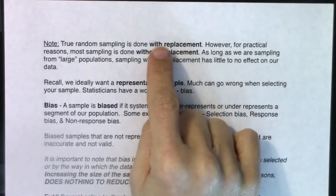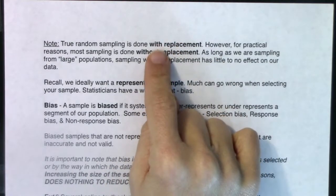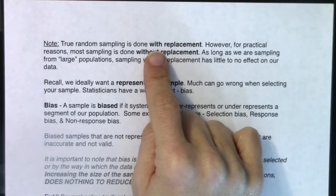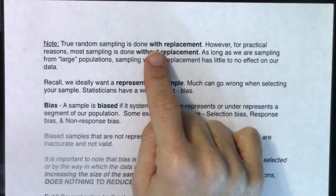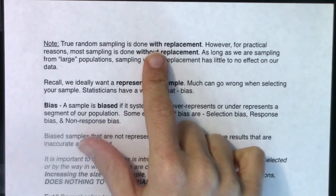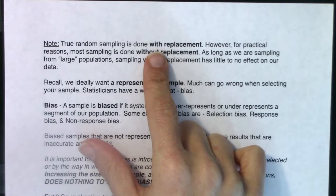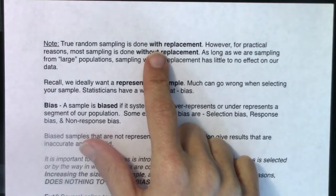You see this pop up on your calculator. Your calculator is sampling with replacement, and that's because we get repeats sometimes. Repeats happen if you sample with replacement. You can see it on your random digit table — sometimes we get repeats popping up there.